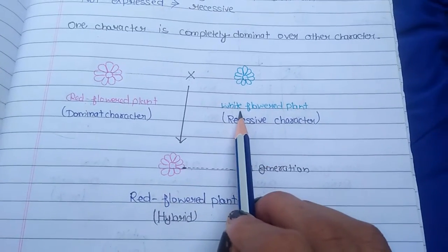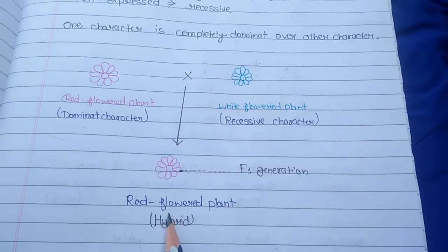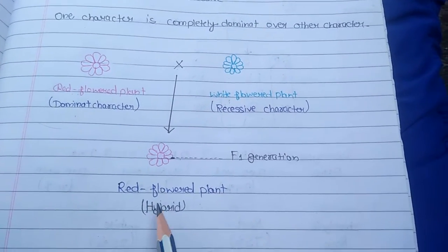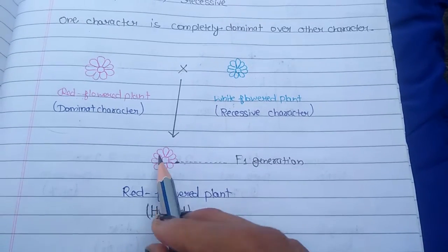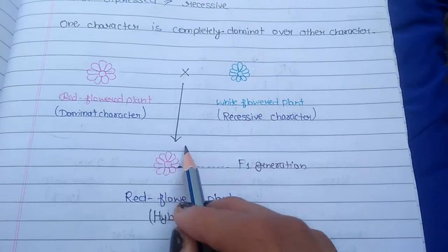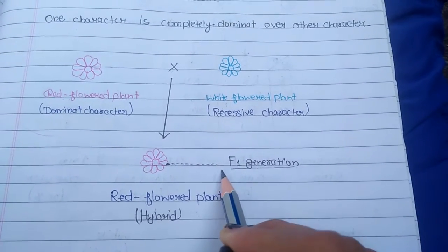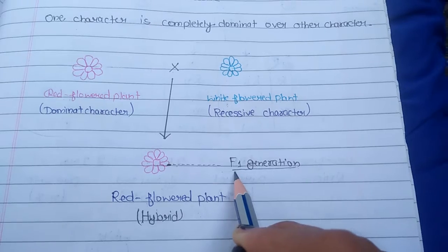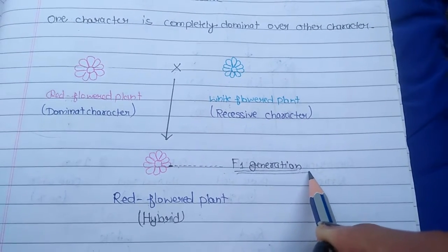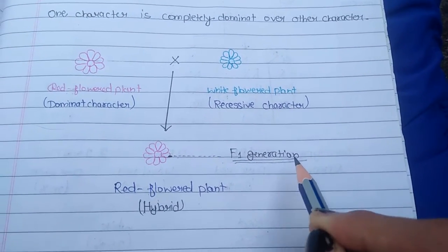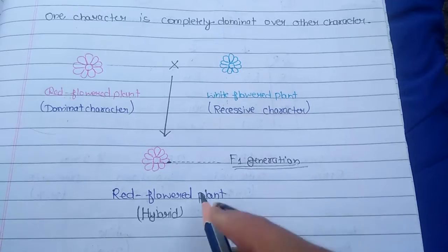We could get mixed together, but we see only one character — we are seeing the first character, which is red. The character that we see in the F1 generation, after mixing in the first hybrid, we call this the F1 generation. So the first character we get is red.